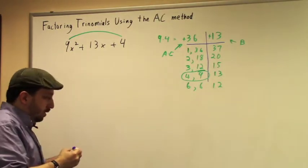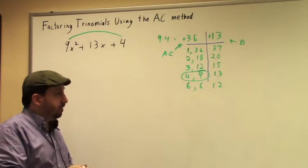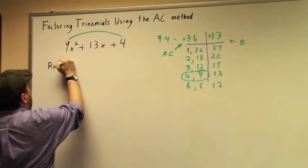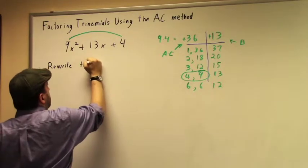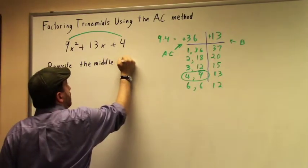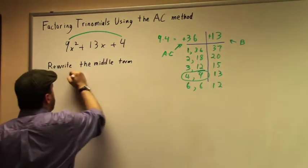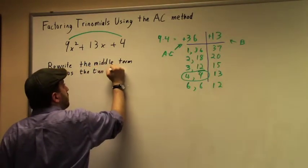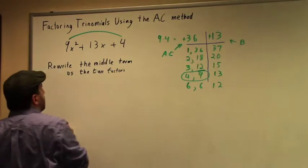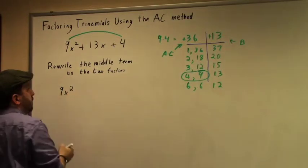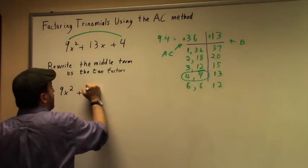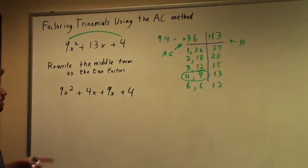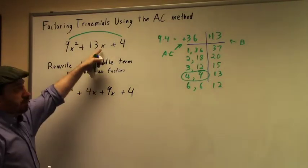Now the next step is where this gets very different from the reverse FOIL method. What we're going to do next is we're going to rewrite our middle term as those two factors. So I'm going to rewrite my expression as 9x² + 4x + 9x + 4. And it's really important here that these two guys have the same variables as that middle term.